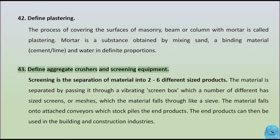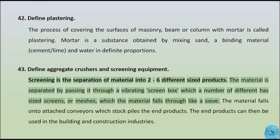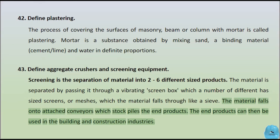Define aggregate crushers and screening equipment. Screening is the separation of material into two or six different sized products. The material is separated by passing it through a vibrating screen box which has a number of different sized screens or meshes through which the material falls like a sieve. The material falls onto attached conveyors which stockpile the end products. The end products can then be used in the building and construction industries.